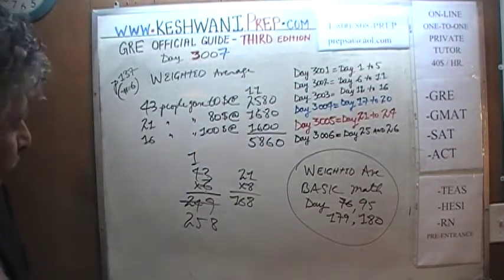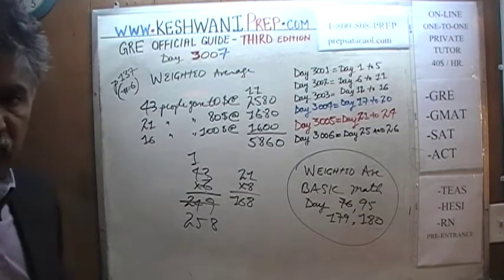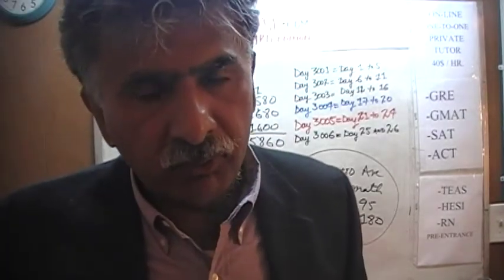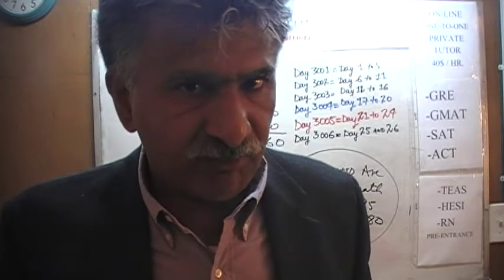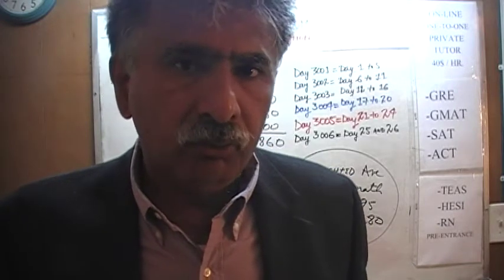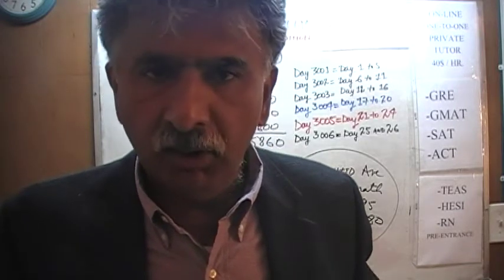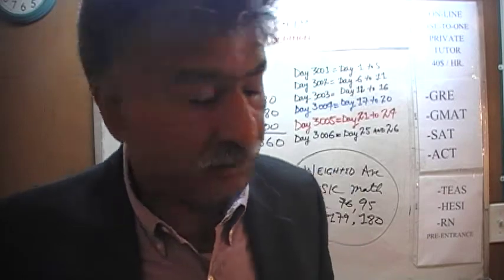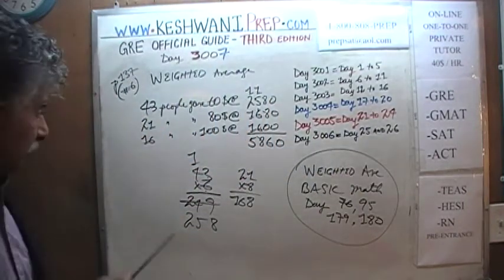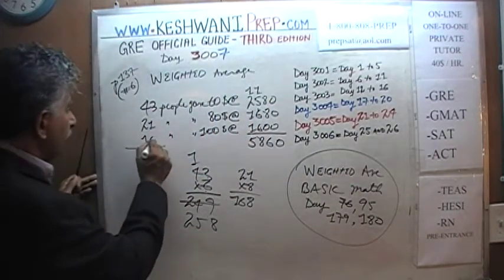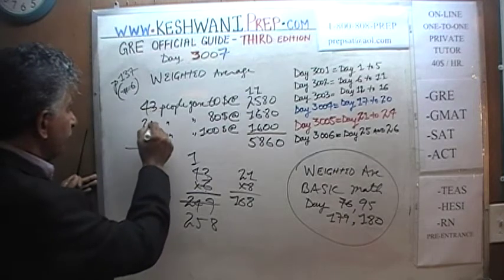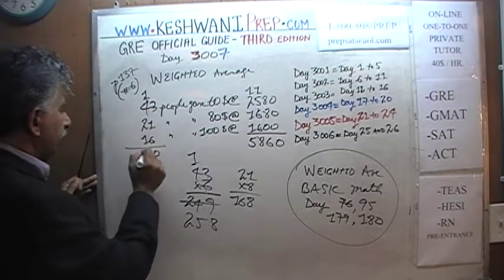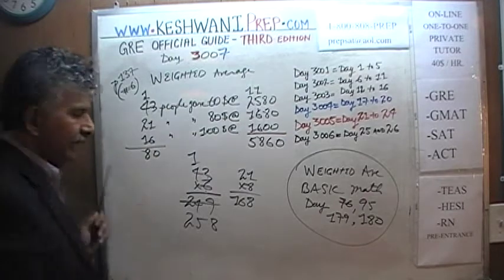So the total is 5,860. The total amount that was given to the charity is $5,860. How many people gave that amount? We need to figure out the average. 43 plus 21 plus 16: 6 plus 3 is 9, plus 1 is 10 — so that's 80 people.